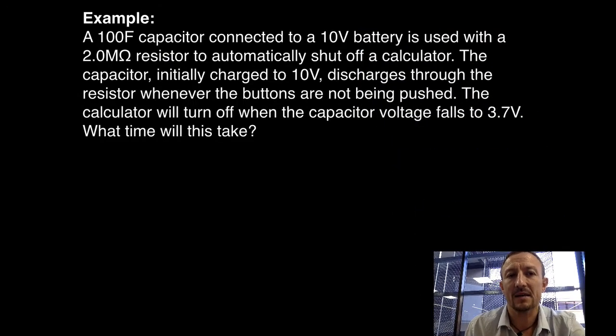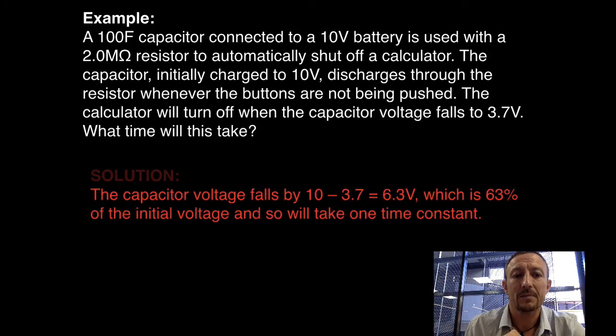So here's an example as to how we can use this. So we've got a 100 microfarad capacitor connected to a 10 volt battery, and is used with a 2 megaohm resistor to automatically shut off a calculator. The capacitor, when initially charged to 10 volts, discharges through the resistor whenever the buttons are not being pushed. The calculator will turn off when the capacitor voltage falls to 3.7 volts. How long will this take? So basically what we need to understand is that the capacitor voltage is going to fall from 10 volts down to 3.7, which is 6.3 volts.